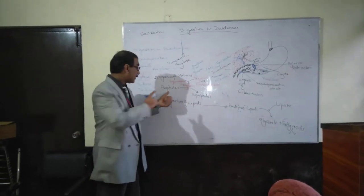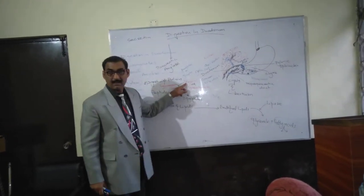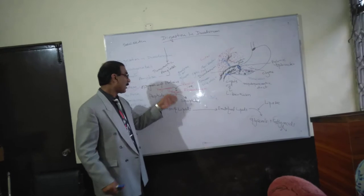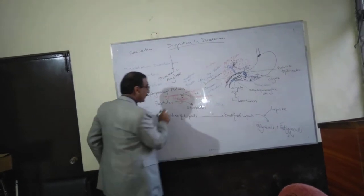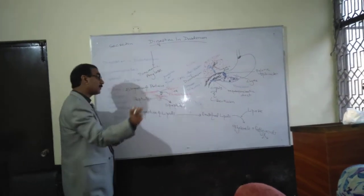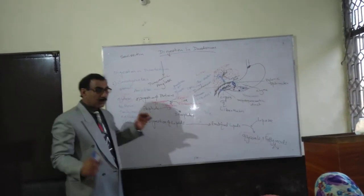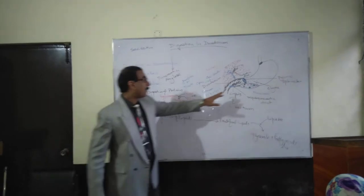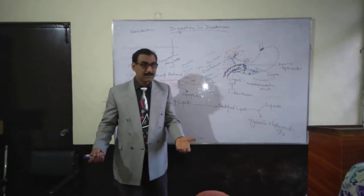Trypsinogen is first activated by two ways: trypsin already present, or enterokinases. The enterokinases or existing trypsin act upon trypsinogen and convert it into trypsin, which is the active form. Trypsinogen is the inactive form. Nature has devised this — if trypsinogen were produced as active trypsin from the pancreas, the ducts would have dissolved.